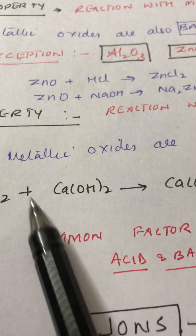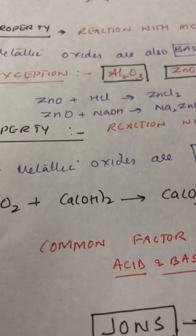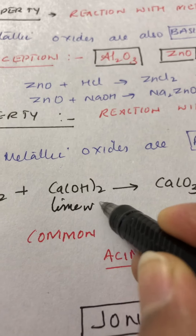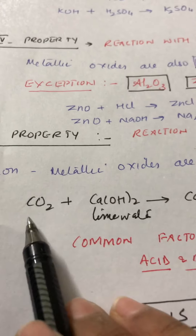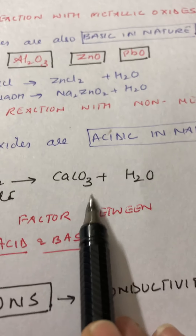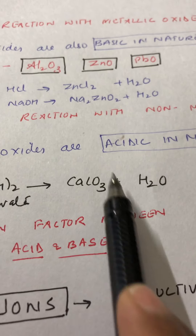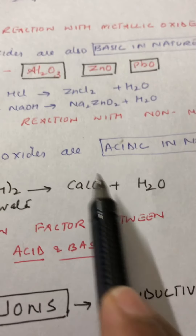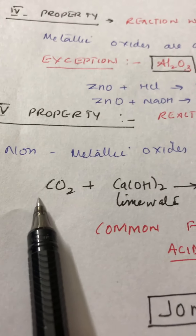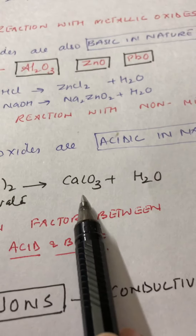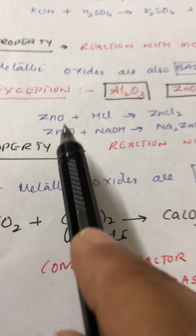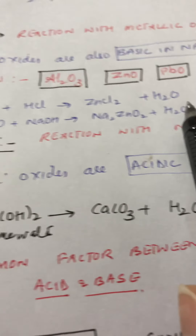Calcium hydroxide — whose common name is also lime water — reacts with carbon dioxide. When you pass carbon dioxide through lime water in the lime water test, the lime water turns milky because a precipitate of calcium carbonate (CaCO₃) is formed. So acidic oxides react with bases to form salt and water.